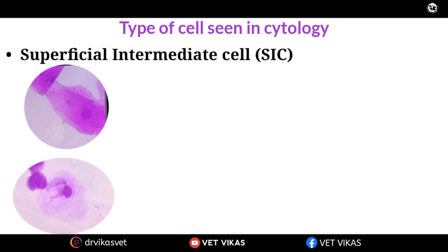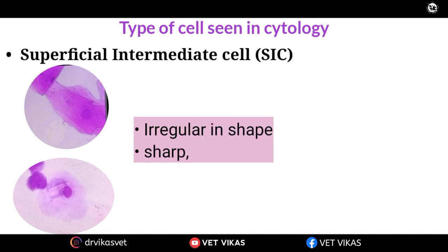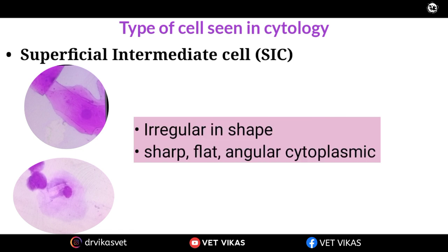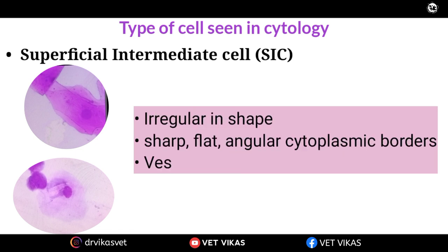The next one is superficial intermediate cell. The superficial intermediate cell is having irregular boundaries; the cytoplasmic border will be flat and angular in case of superficial cells. The nucleus is still vesiculated but the size will be very much smaller as compared to intermediate cell. So this is superficial intermediate.